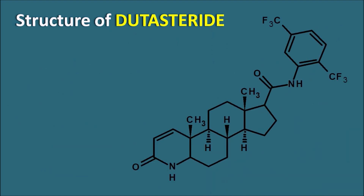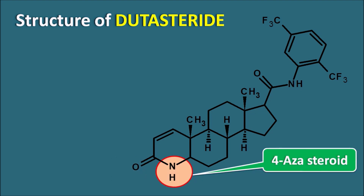The structure of dutasteride has a steroidal nucleus, but without a double bond at the fourth position. Instead, it has a nitrogen at the fourth position, making it a 4-azasteride. It has a double bond at the first and second position, a keto group at the third position, and at the 17th position an amide attached with a phenyl ring with trifluoromethyl substitution. This structural similarity is responsible for the drug's action on the 5-alpha reductase enzyme.